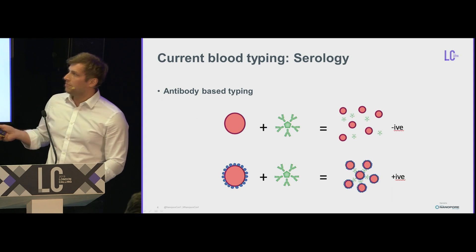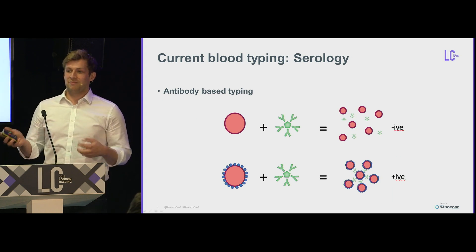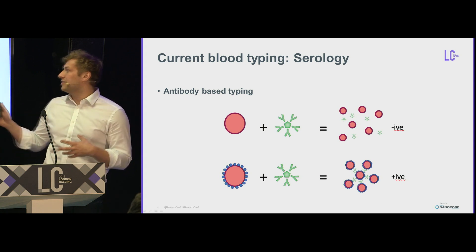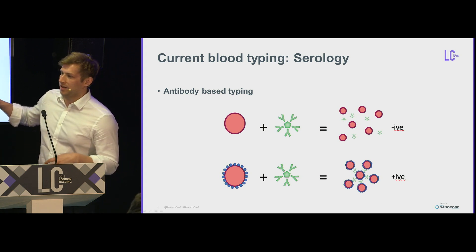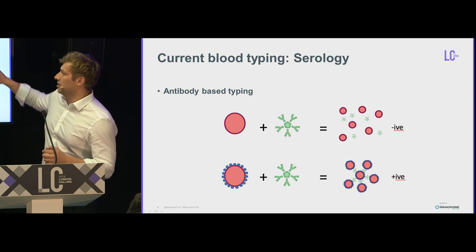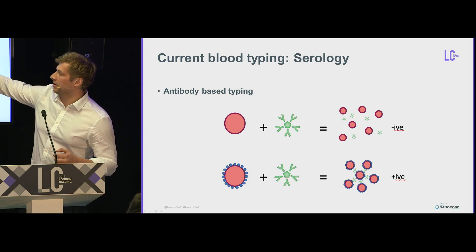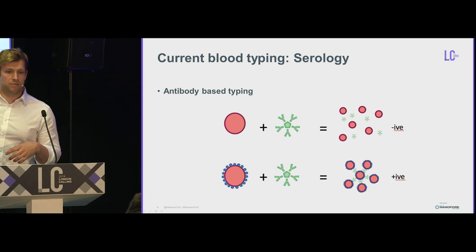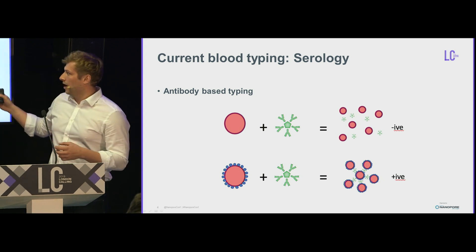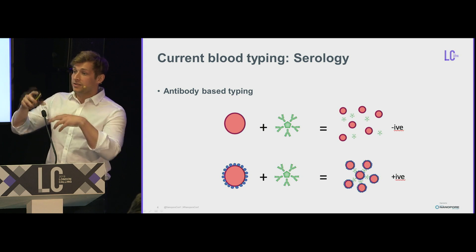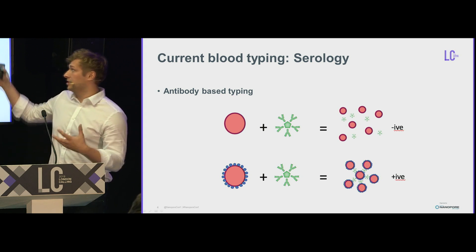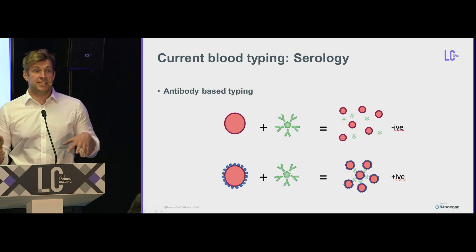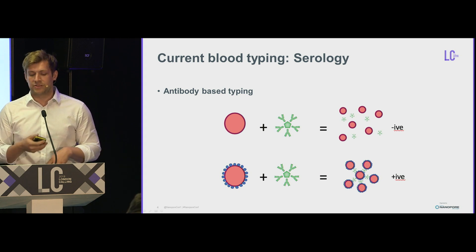Current blood typing is mainly done by serology. Immunohematologists will say it's not technically true, but most of it is done by serology. Basically, you get some red cells, you get an antibody specific to an antigen, and if you mix them together and they agglutinate, you're positive for that antigen; if they don't agglutinate, they're negative.